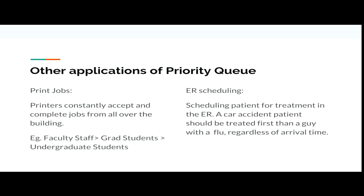Some other applications that Priority Queue uses: for example, in print jobs — like in school we always print many documents — the printers constantly accept jobs from all over the building. The priority can be highest for faculty staff, then graduate students, then undergraduate students. Another application would be emergency room scheduling — for example, a car accident patient versus a person with the flu who arrived at the same time. The obvious choice would be to attend to the car accident patient first.